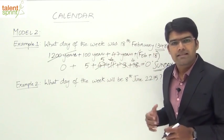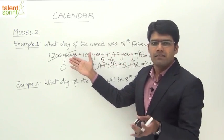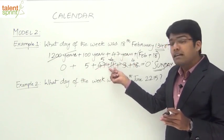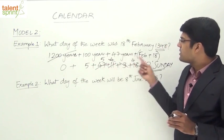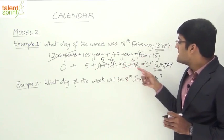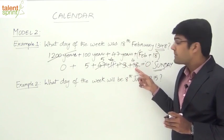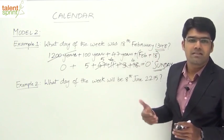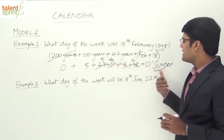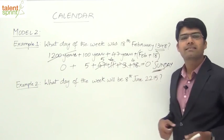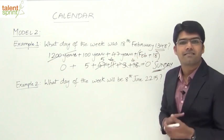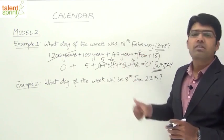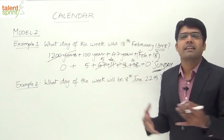In the exam, you need not write all individual parts — this breakdown is only for understanding. 1200 years = 0 odd days; 100 years = 5 odd days; 47 years = 47 odd days + 11 extra for leap years; month code for February = 3; date = 18. Though 1348 is a leap year, we don't add the extra odd day since 18th February is before 29th February. Total odd days = 0, which gives Sunday.